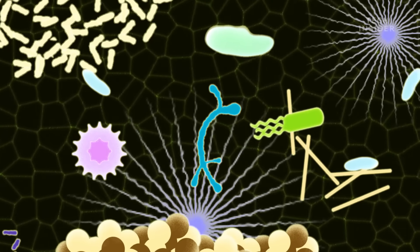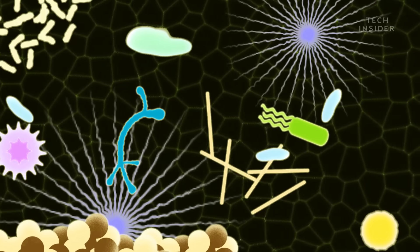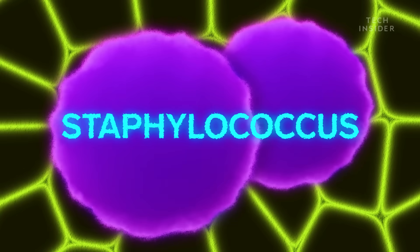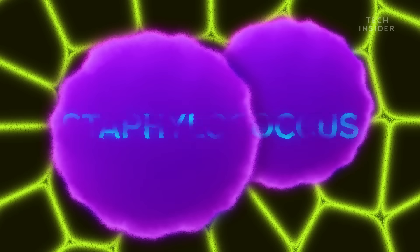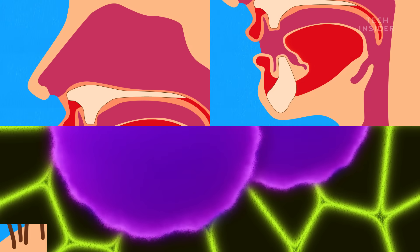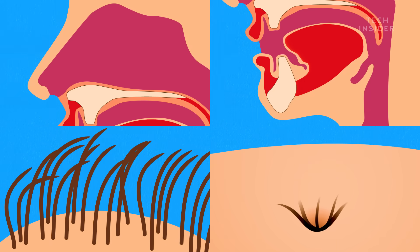Now many of those microbes aren't unique to belly buttons, like Staphylococcus, which can lead to staph infections. It shows up in noses, throats, hair, and yes, even belly buttons. But the researchers also discovered other bacteria never before seen on human skin.